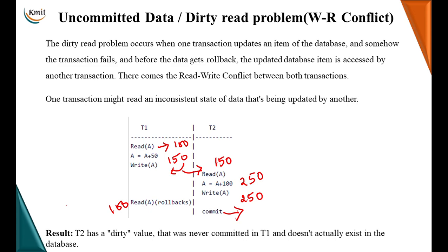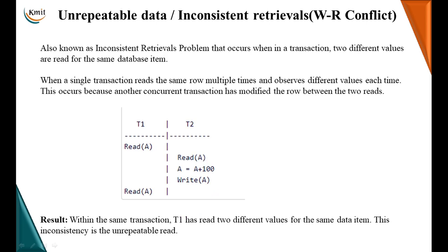Now, T2 has read 150 whereas 150 is not there in the database at all. It was 100, supposed to be 100. Now, because of this only we call it as dirty read or uncommitted data. Because it read an uncommitted data, this value is meaningless. So, this is another write-read problem or conflict.